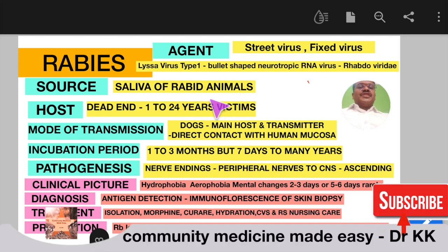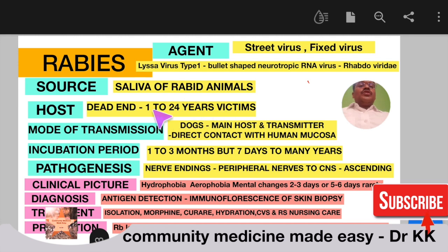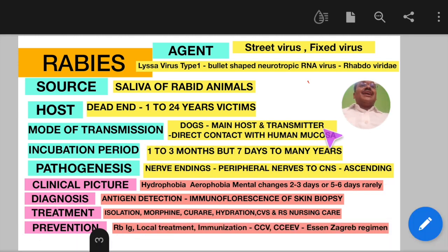The saliva of rabid animals is the source of infection. Man is usually the dead-end host for rabies, and people in the age group of 1 to 24 years are the common victims. Dogs are the main host and transmitter of rabies, and transmission happens by direct contact of infected saliva with human mucosa because of a dog bite.